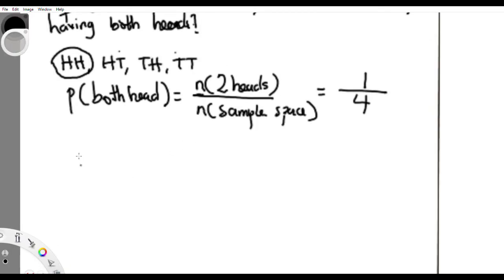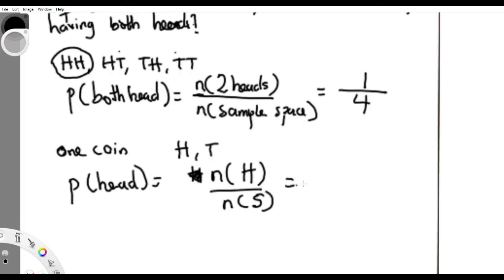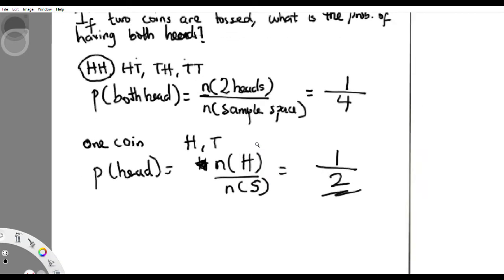What if you were tossing just one coin — what's the probability of having one head? The probability of a head appearing when you toss one coin: the sample space is head or tail, so the number of heads is one and the sample space is two, giving one over two. This covers the elementary aspect of probability.